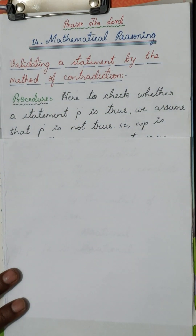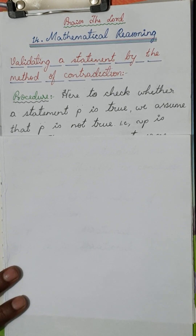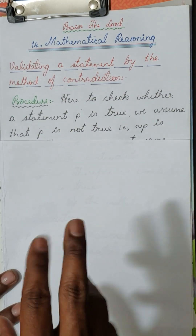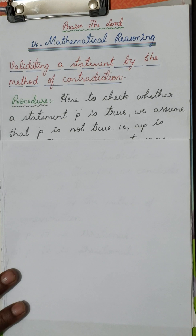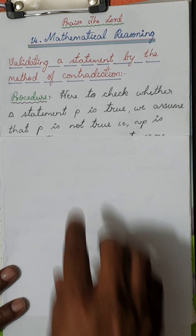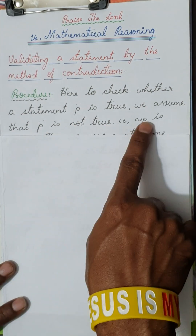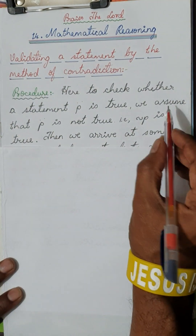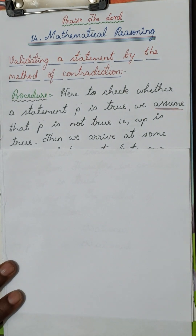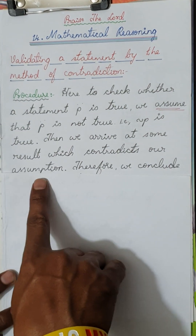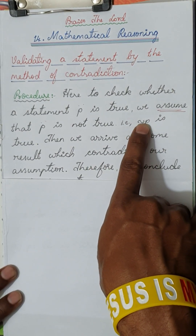we will assume that P is not true. For example: Raju is a good boy — we negate it: Raju is not a good boy. This is how we start; this is contradiction. We assume that P is not true, that is, negation P is true. This is an assumption — we assume negation P is true.